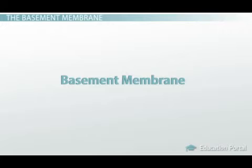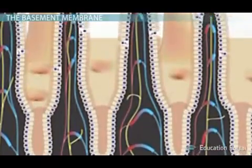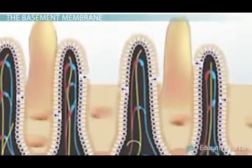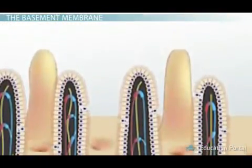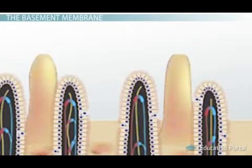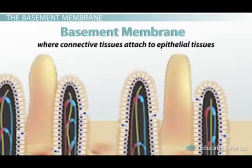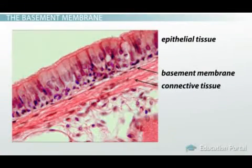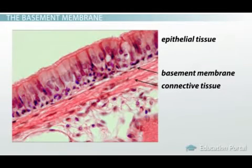Another important feature of connective tissue is the basement membrane. While you may be used to hearing about the basement membrane in relation to epithelial tissue, it is also an important structure for connective tissue. While connective tissues do not have their own basement membrane, this is where connective tissues attach to epithelial tissues. If you look at this slide of the trachea, you will clearly see the basement membrane of the tracheal epithelial tissue is connected to the connective tissue right underneath it.